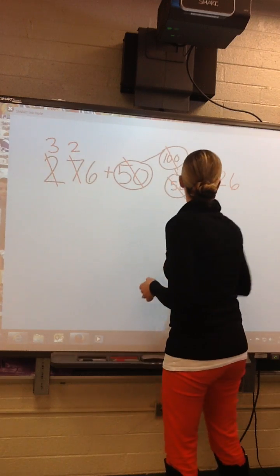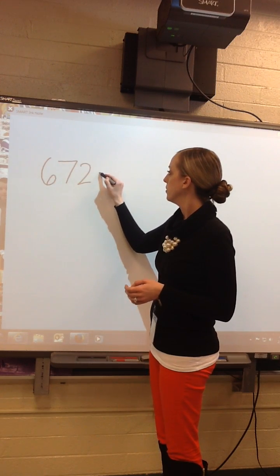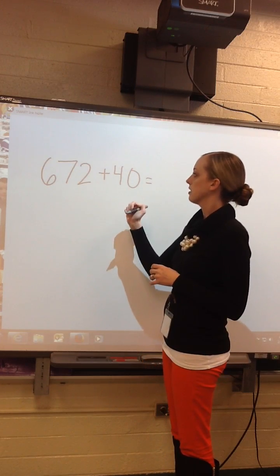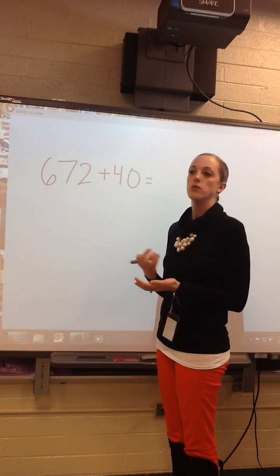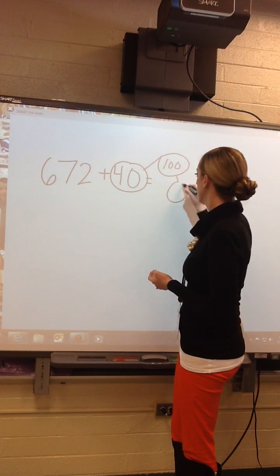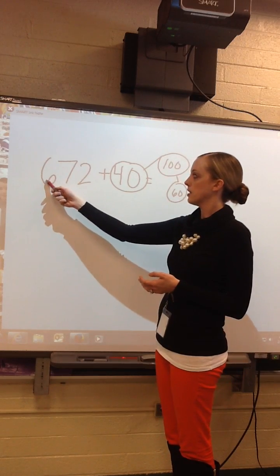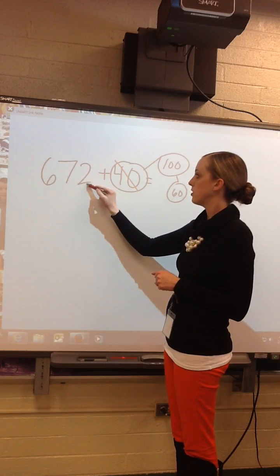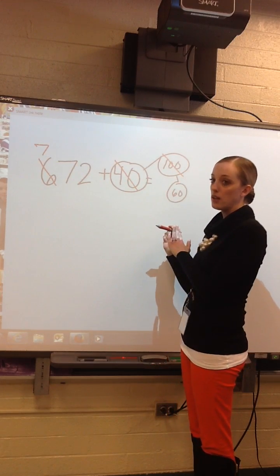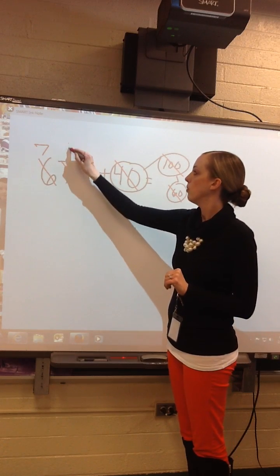I'm going to do one more. If I had 672 plus 40 — what am I adding? Hundreds, tens, or ones? In this case, I'm adding tens. 4 tens and 7 tens would cause me to regroup. So instead of regrouping, I'm going to turn this into 100. Number bond: 40 and what make 100? 60. So I was supposed to do 672 plus 40; now I'm going to do 672 plus 100. Add our 100 — now we have 772. We added too many, so we're going to subtract the extra tens, which are 6 tens. 7 tens minus 6 tens is 1 ten. Our sum is 712.